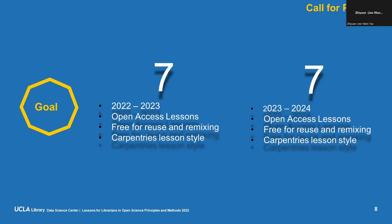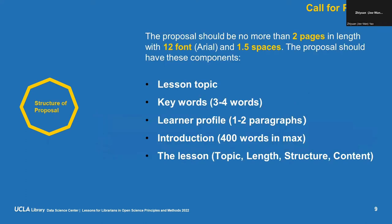We will support you all along the way. The proposal should be no more than two pages in length, with size 12 Arial font and 1.5 spacing. The proposal should have these components: the lesson topic or title, 3 to 4 keywords, and 1 to 2 paragraphs about the learner profile, plus an introduction about why what you propose is important — maximum 400 words. The rest of the proposal covers the lesson topic, lesson length, structure, and content.